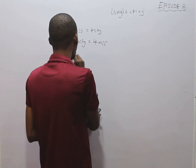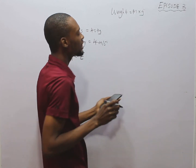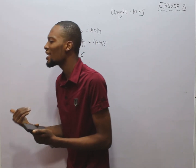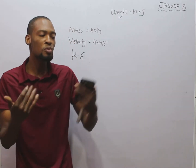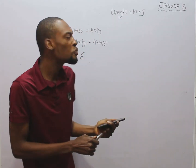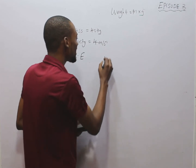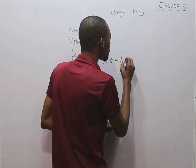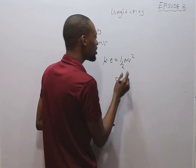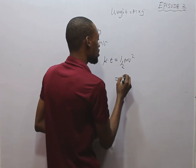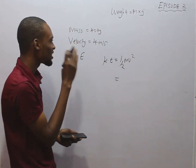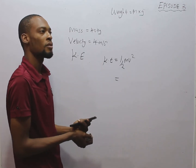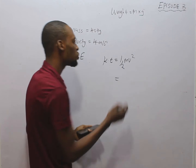The question says calculate the kinetic energy. As explained in Episode 2, kinetic energy is the energy a body possesses due to motion — if you are moving, you possess kinetic energy. The formula is: KE = ½mv², that is, half times mass times the square of velocity.